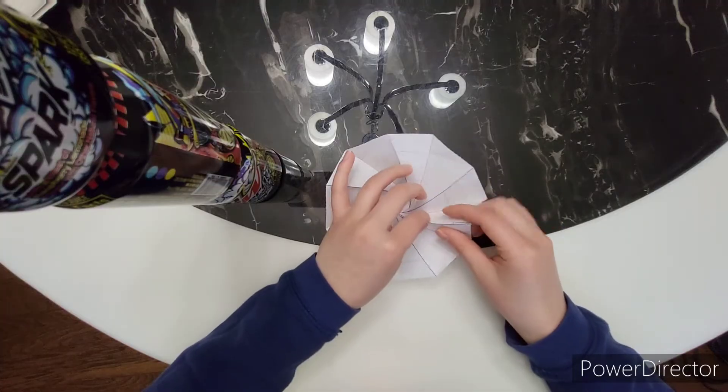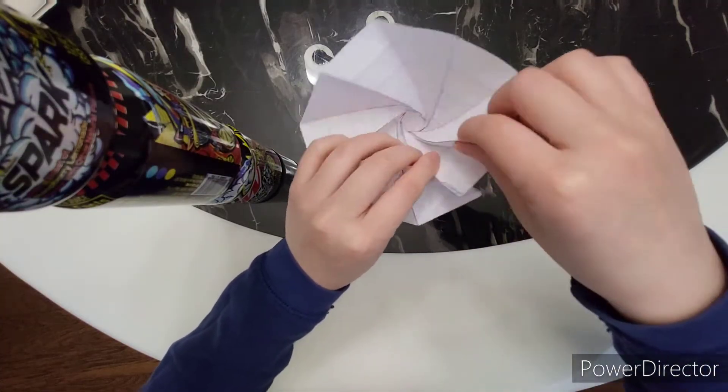Now, for the hard part. Slowly fold the paper inwards until a spiral formation takes place.